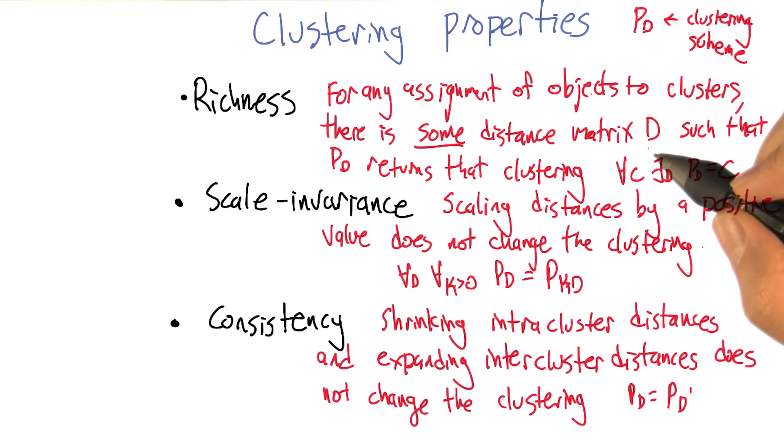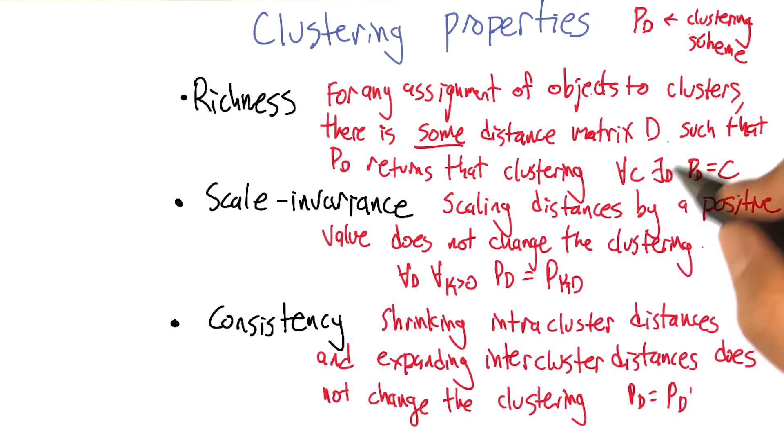All inputs, which is to say the distance matrices, sure, those are valid. And anything could be an output, any way of clustering could be an output. Because, you know, think of the alternative. The alternative is there's certain clusters that you just can't produce. And that seems wrong, doesn't it? It ought to be the case that your clustering algorithm should produce whatever is appropriate and shouldn't be limited in what it can express.